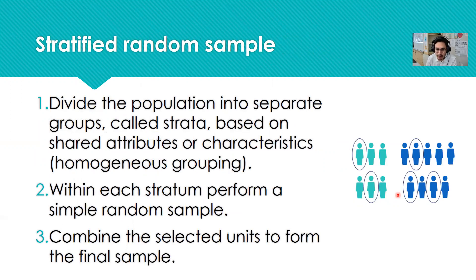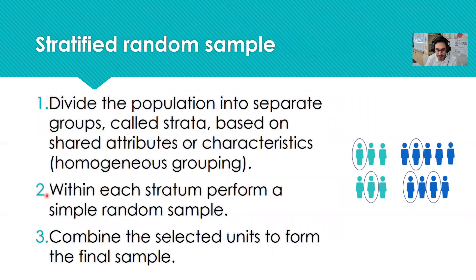Method number two is called the stratified random sample, and it's a three-step process. First, divide the population into separate groups called strata based on some shared attributes or characteristics — for example, male/female, or in a high school, by grade level: freshmen, sophomore, junior, seniors. Then within each stratum, you perform an SRS — for instance, pull two names out of the male group and three out of the female group. Finally, combine the selected units to form the final sample.